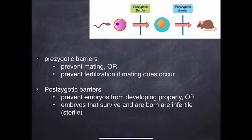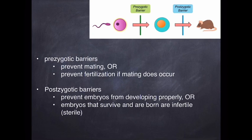There are two categories of reproductive isolating mechanisms: pre-zygotic barriers and post-zygotic barriers. 'Zygotic' refers to the formation of a zygote or fertilization. Pre-zygotic barriers are things that prevent mating from occurring, or that prevent fertilization even if mating does occur. Post-zygotic barriers are those things that either prevent the embryo from developing — resulting in a natural miscarriage — or if the embryo survives and is born, that offspring will be sterile.